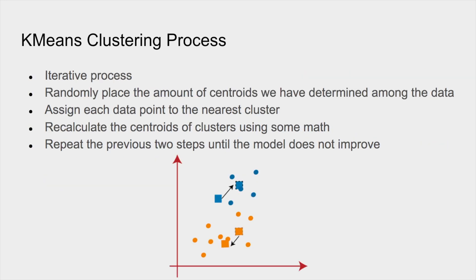The process for k-means is pretty simple. It's an iterative process and it goes until the model never improves. What we're going to do first is randomly place the amount of centroids that we've determined - our k number of centroids - randomly among the data. And then we're going to go over these two steps right here.